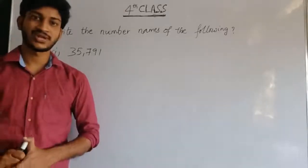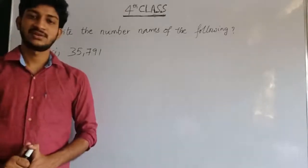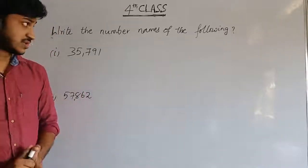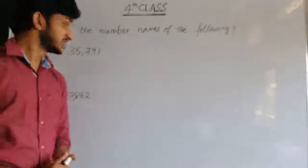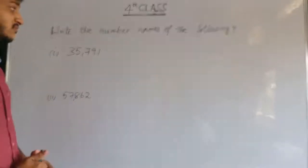Hi students, good morning everyone. Let's start. The next question is: write the number names of the following. So here we have to write the number names for given numbers. The first number is thirty-five thousand seven hundred ninety-one. Write this number in word form.